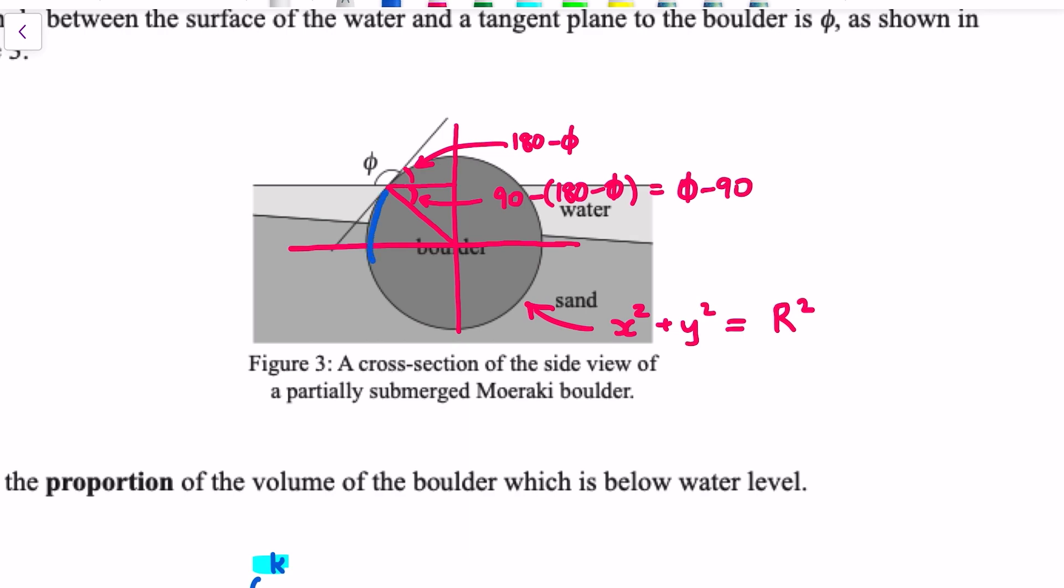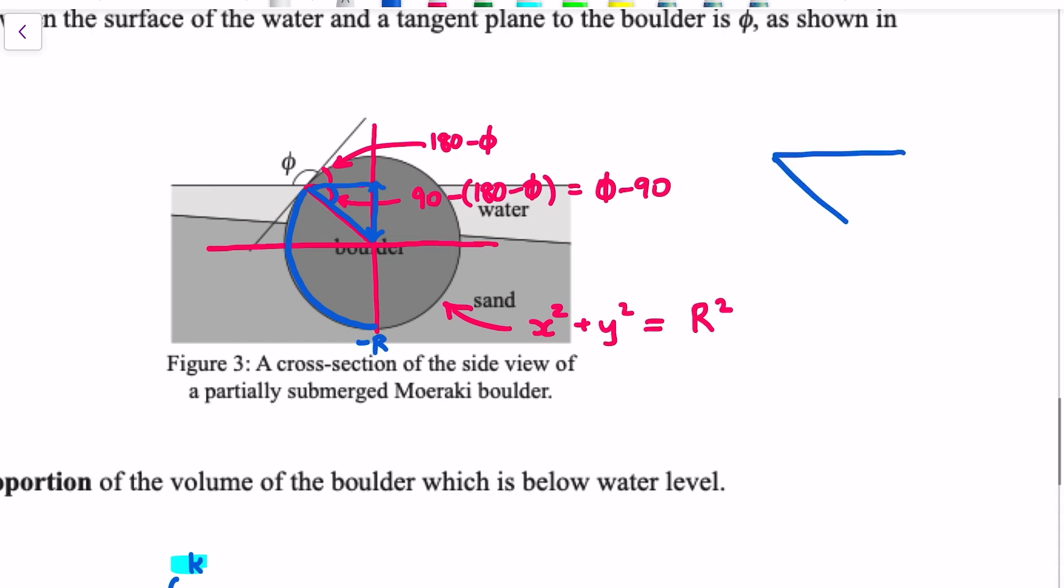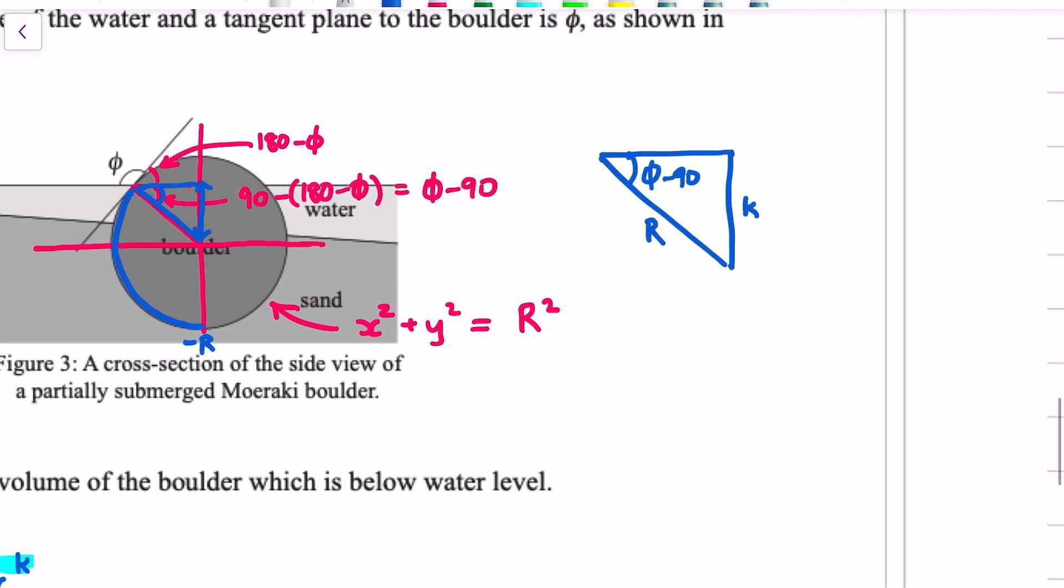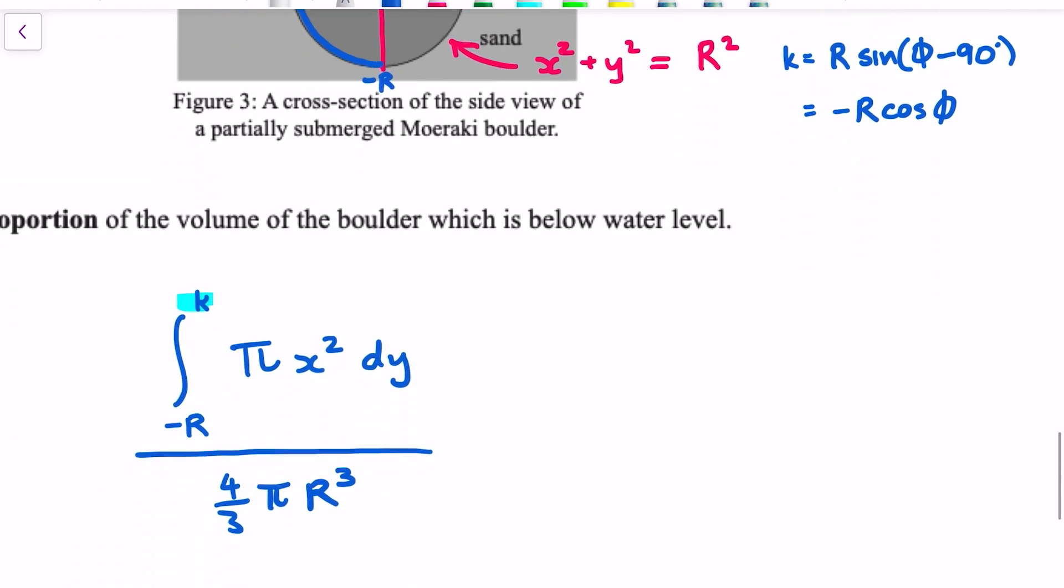And then, like I was saying, I'm integrating from the bottom of the boulder, -R, up to the top value here, which is actually the opposite side of this triangle. So I've got a right angle triangle. That angle there is φ - 90. And the radius is R. And this height here, which I call K, can be found by going R times sin(φ - 90). And it turns out that when you take the sine of φ - 90 degrees, you end up getting -cos(φ). So it's -R cos(φ).